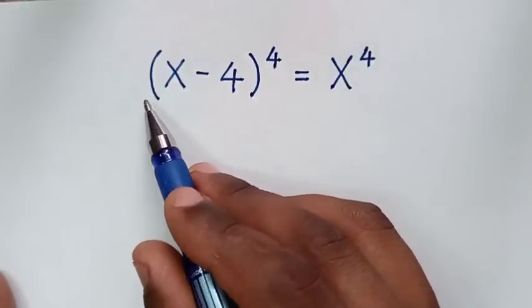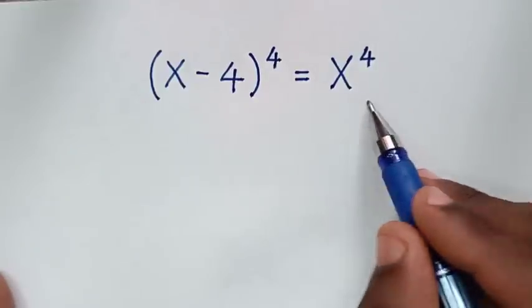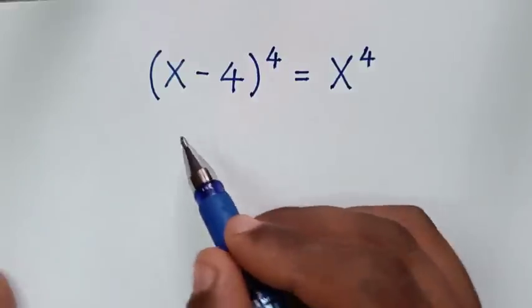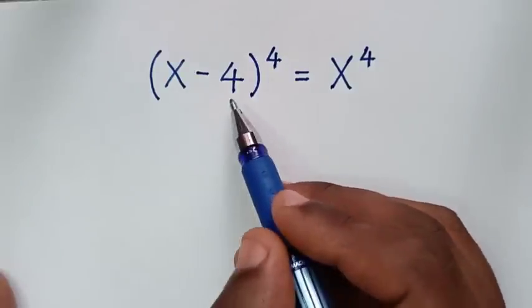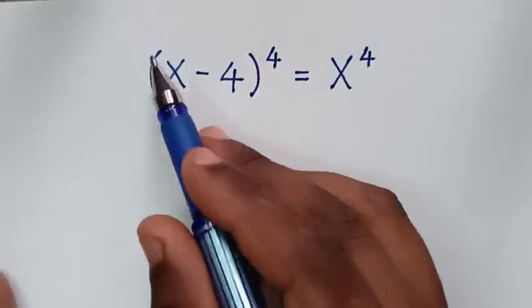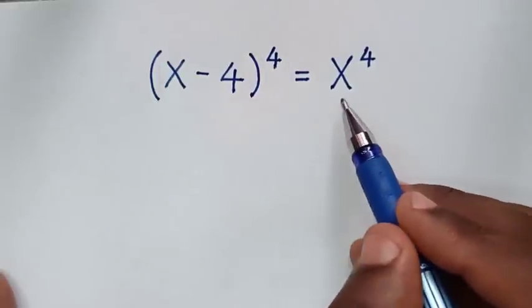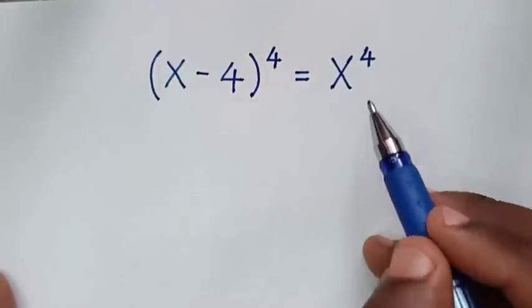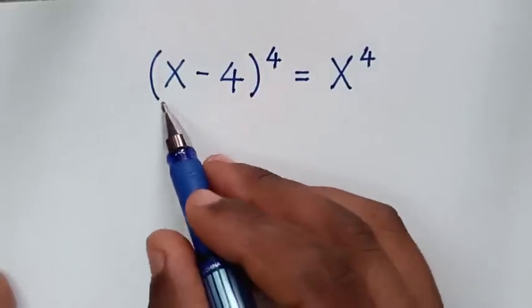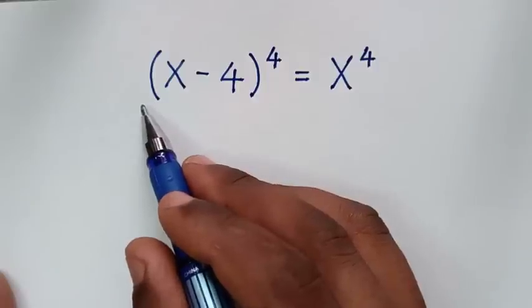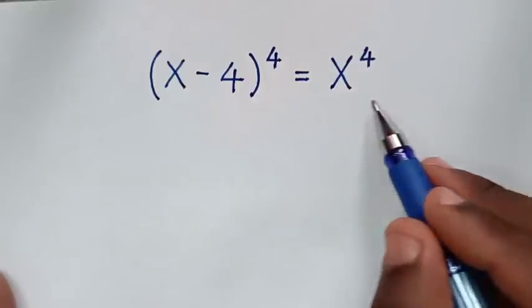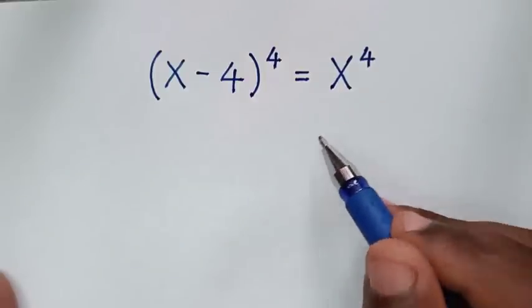Hello, you are welcome to solve this math problem which is (x minus 4) to the power of 4 equals x to the power of 4. We need to find the values of x from this equation.